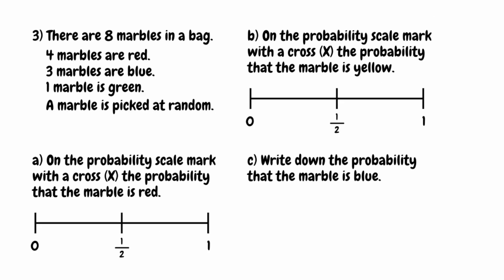For question three, there are eight marbles in a bag: four red, three blue, and one green. A marble is picked at random. For part A, we want to mark the probability that the marble is red. There are four red marbles out of eight total, so the probability is four eighths. Dividing numerator and denominator by four gives us one half. So we mark the cross on one half of the probability scale.